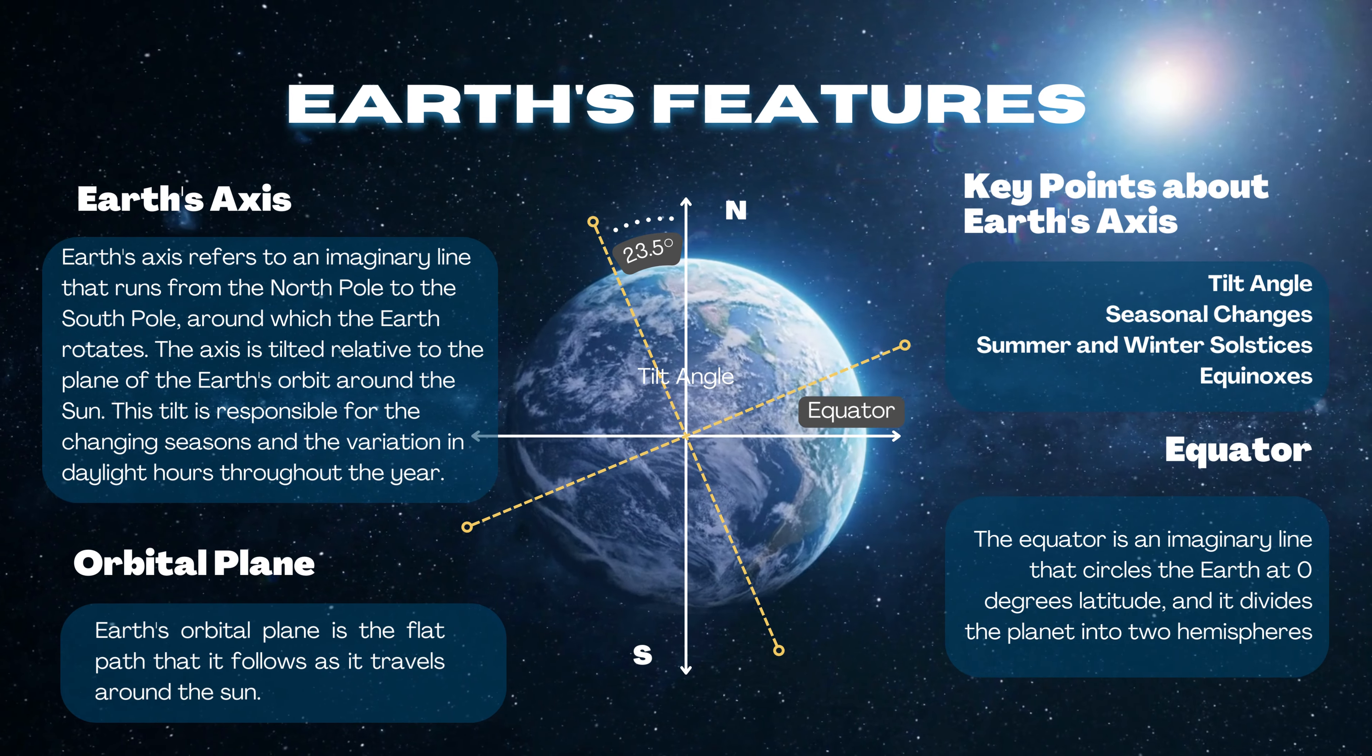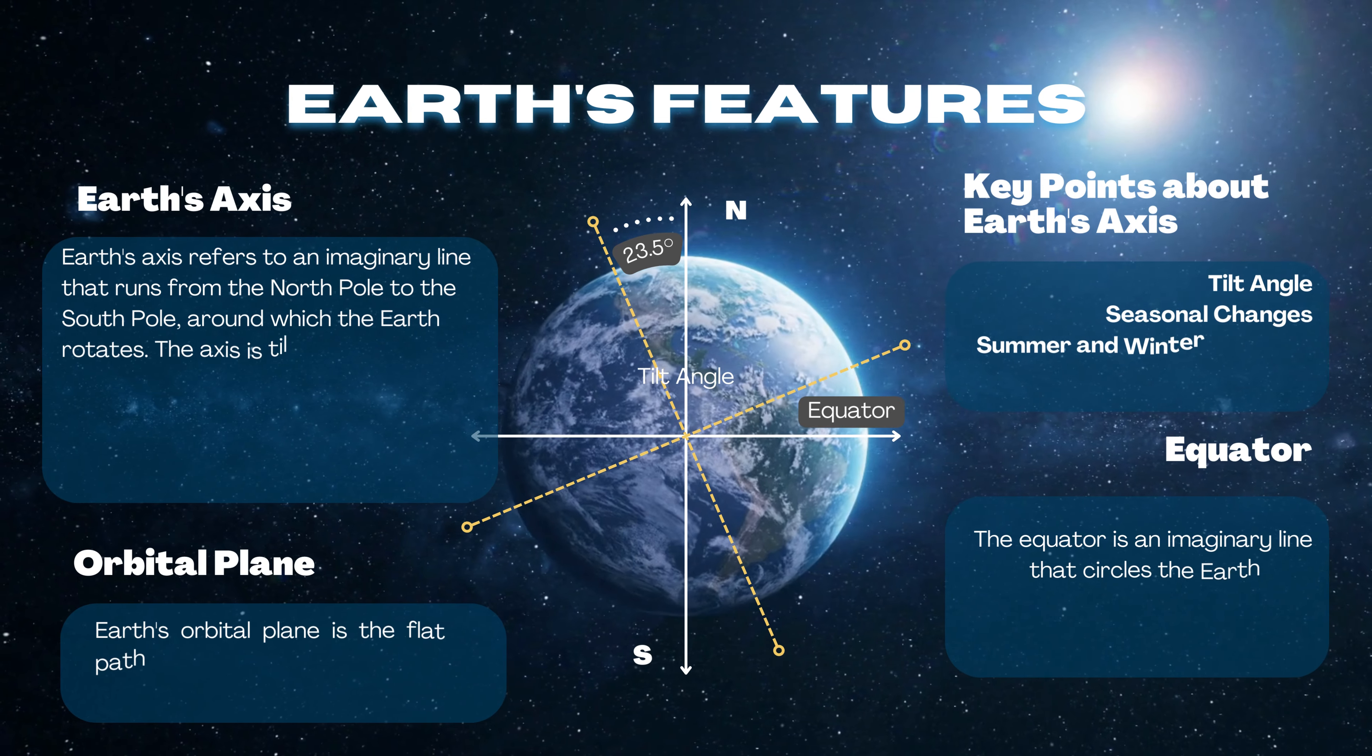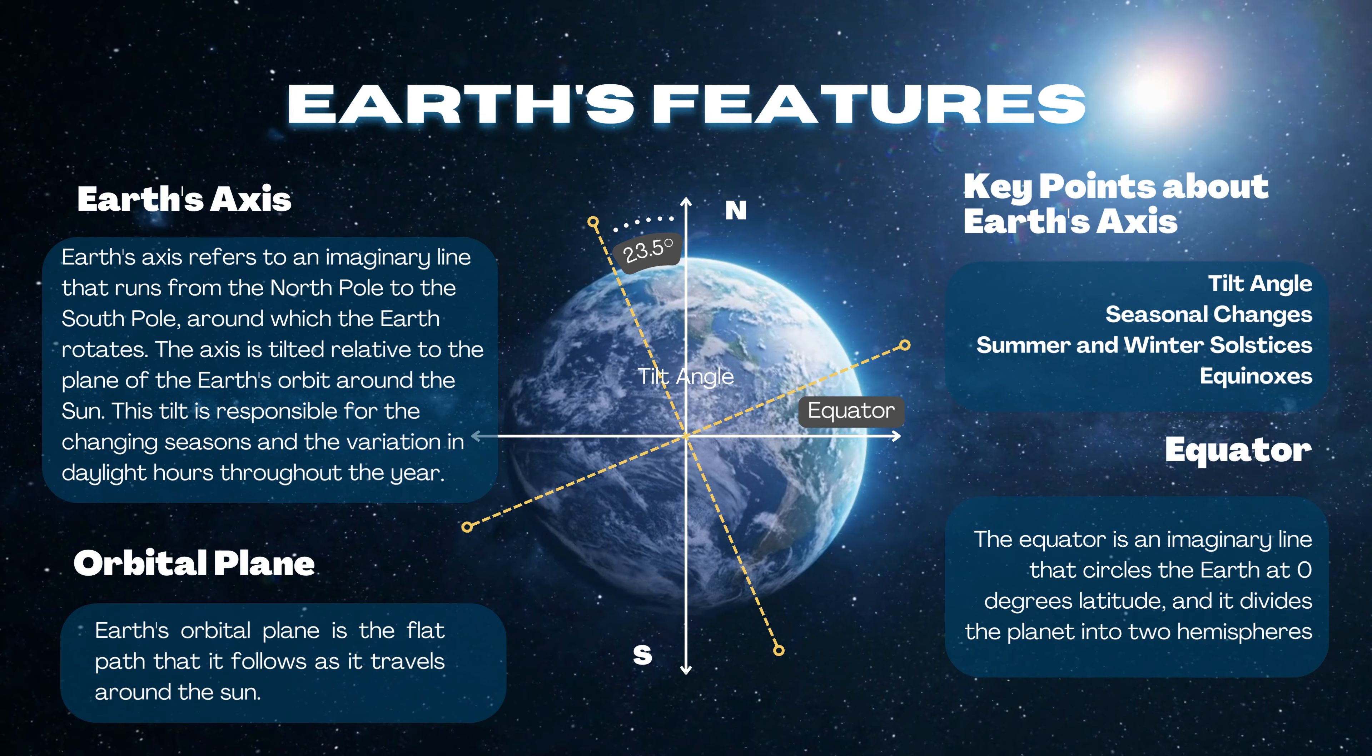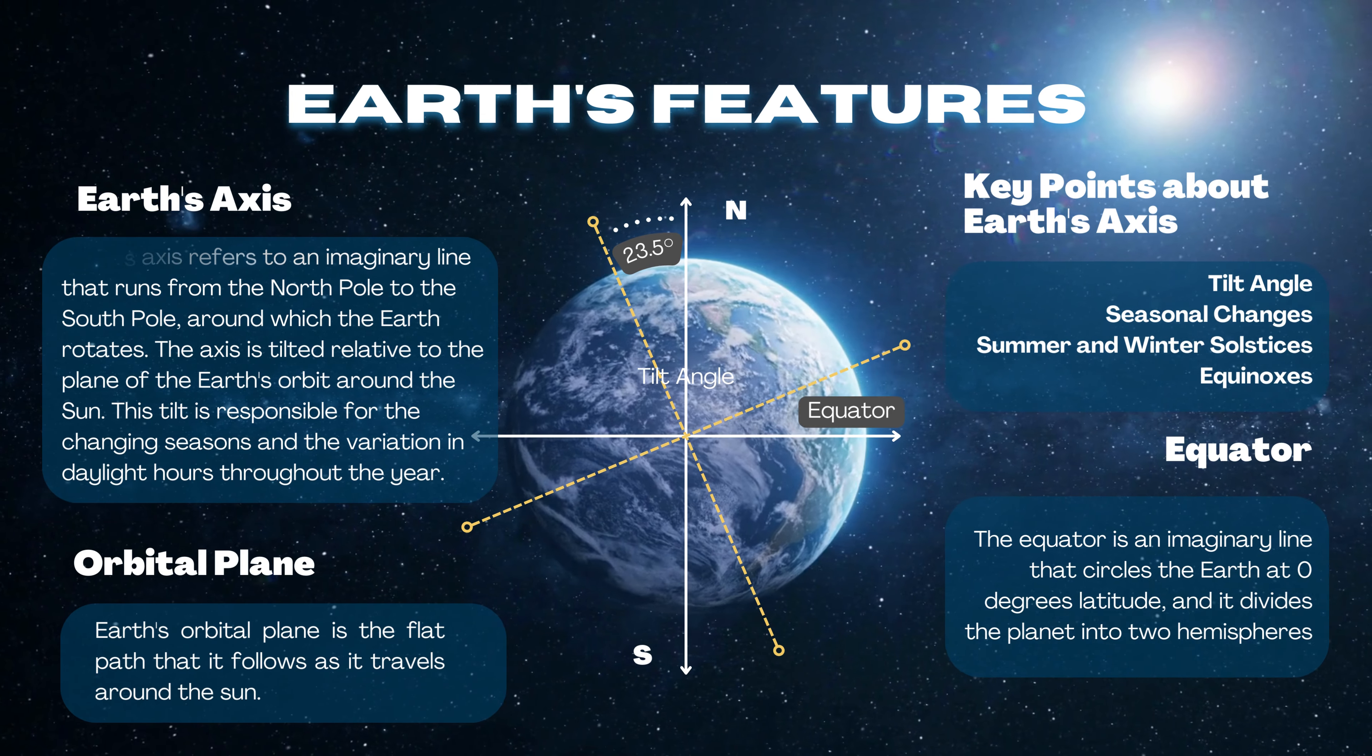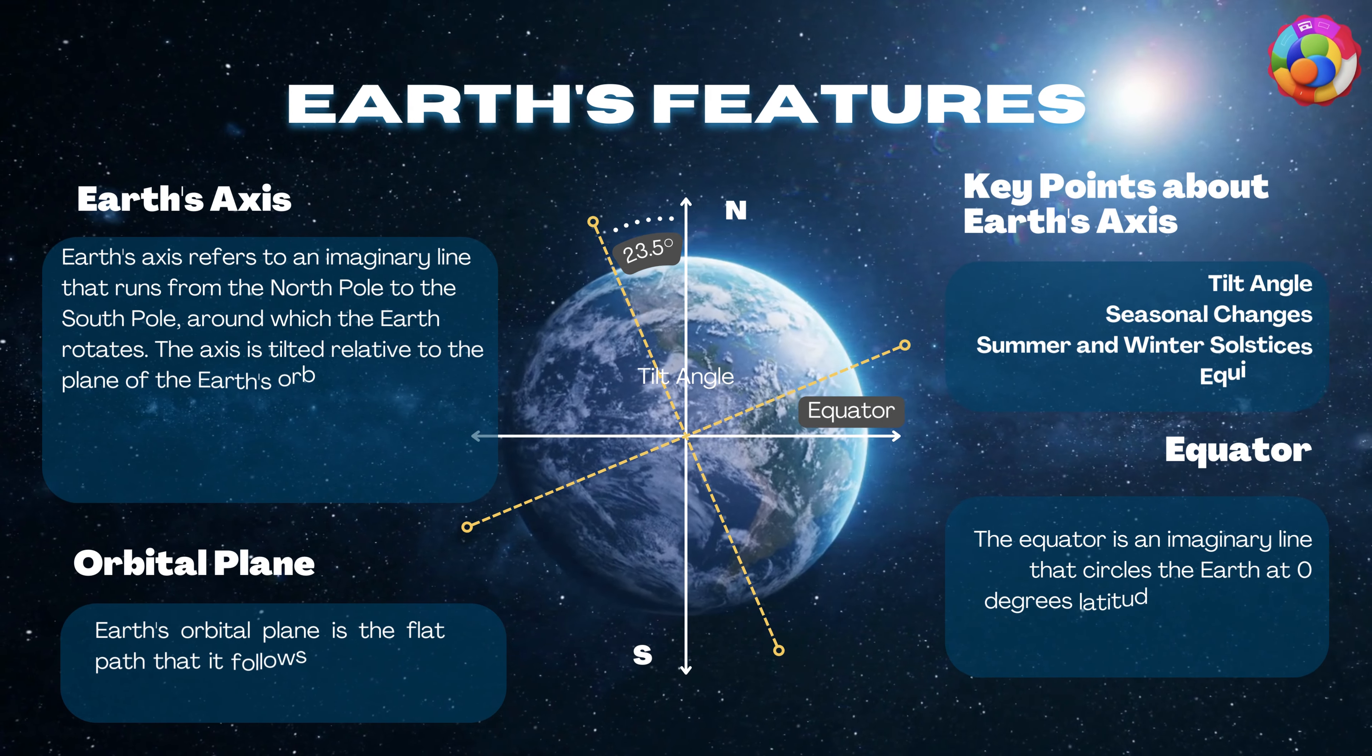Orbital plane: Earth's orbital plane is the flat path that it follows as it travels around the sun. Key points about Earth's axis: tilt and seasonal changes, summer and winter solstices, and equinoxes.